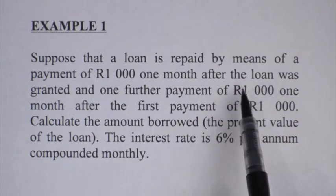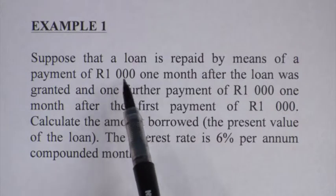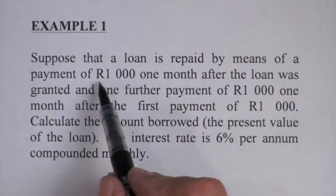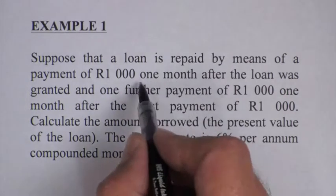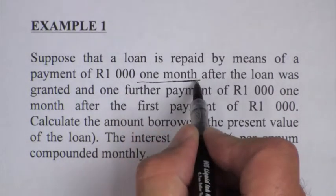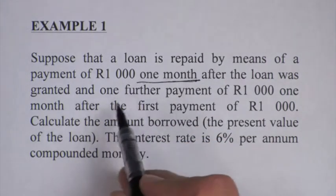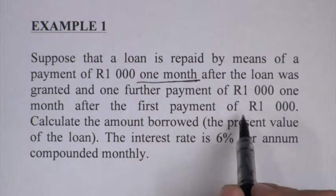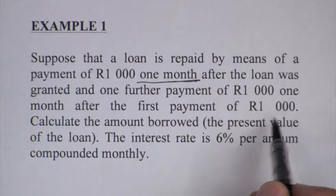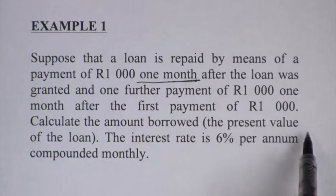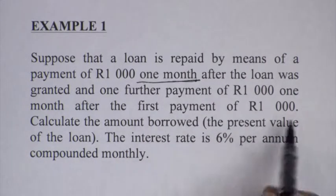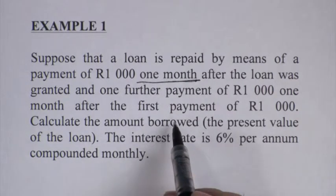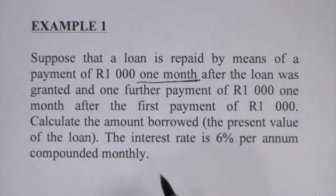The first important thing is to know when this first payment was made. The first payment was made of 1000 Rand one month after the loan was granted, and one further payment of 1000 one month after the first payment. Calculate the amount borrowed, the present value of the loan. So how much money was borrowed if he paid it back by two 1000 Rand installments.